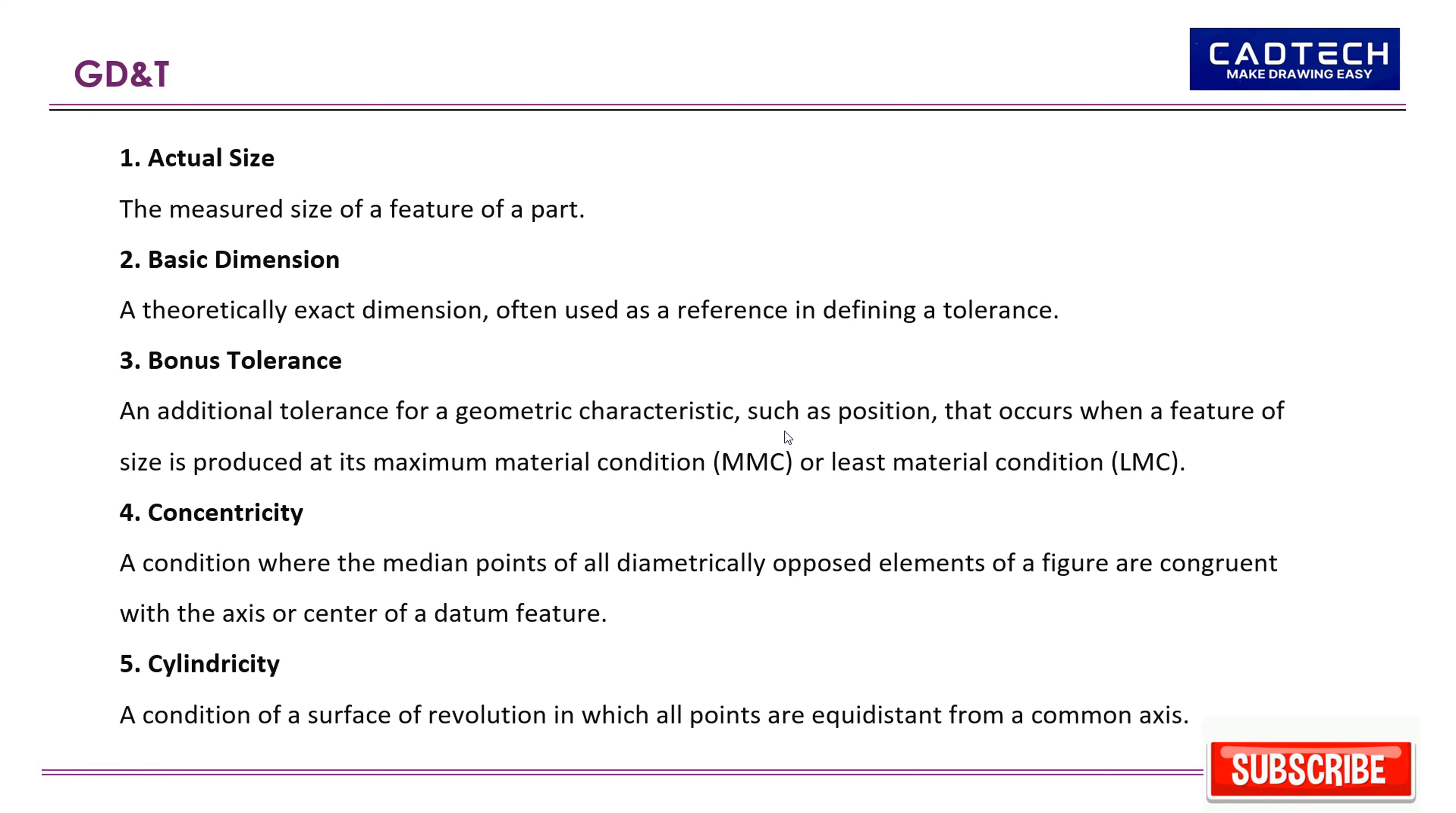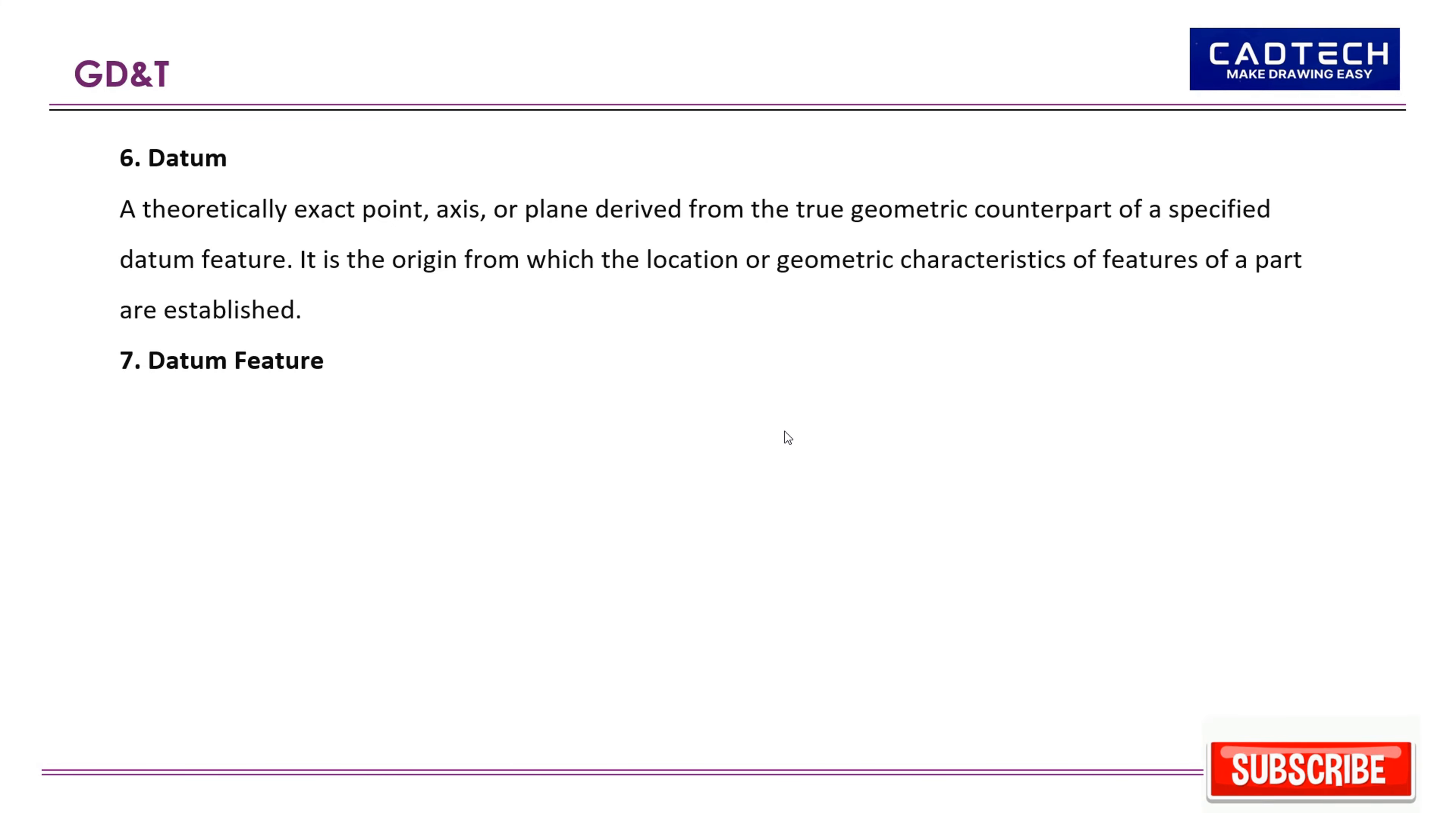6. Datum: A theoretically exact point, axis, or plane derived from the true geometric counterpart of a specified datum feature. It is the origin from which the location or geometric characteristics of features of a part are established.